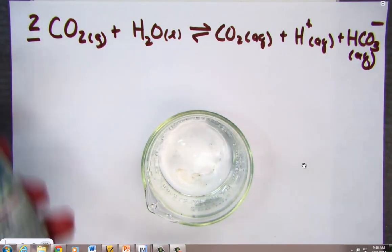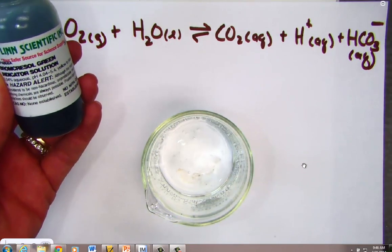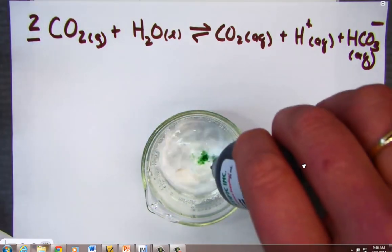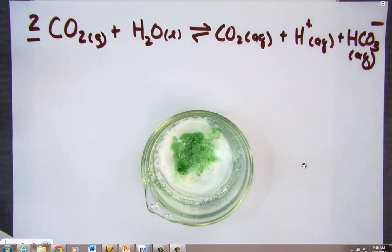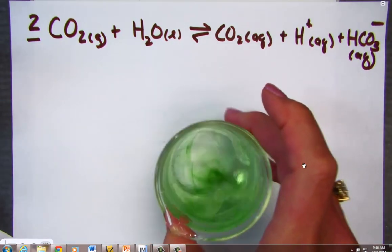Now to help us watch this and observe it a little bit, I'm going to add some bromo-cresol green indicator and give us an idea of where the pH is in this solution. I can see a little bit of bubbling, give it a stir.